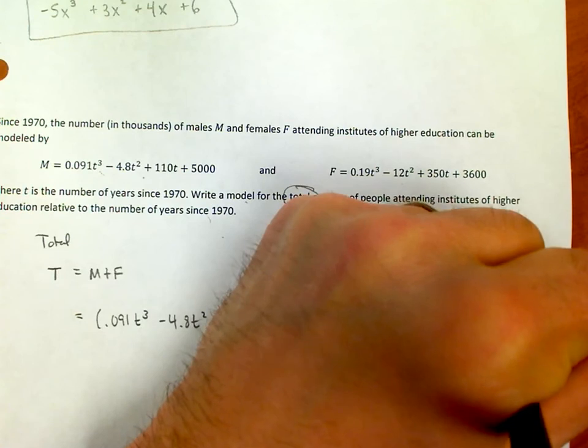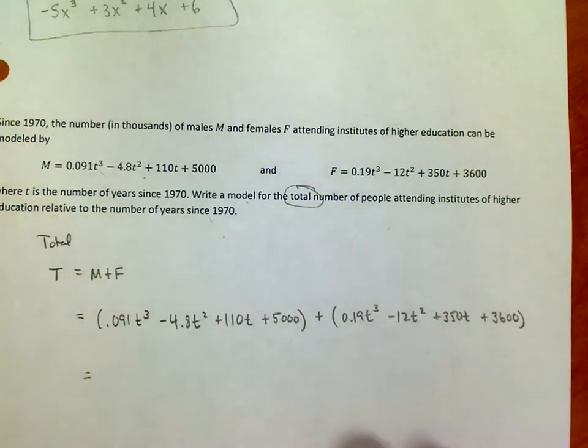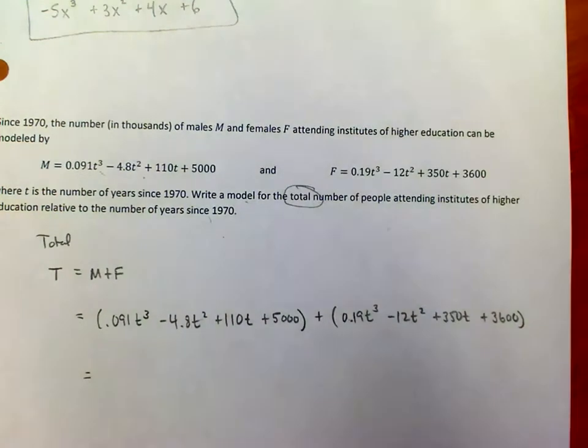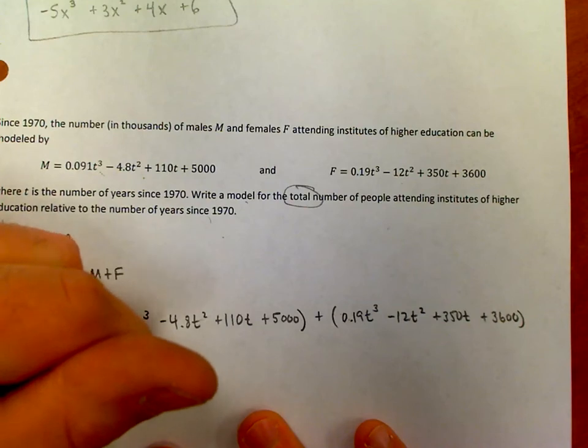I just need to combine like terms now, right? I don't need the parentheses, that doesn't matter, just like the previous video. And maybe I just get a calculator out and I go through and I make sure that I get my decimals correct. So what is 0.091 plus 0.19? And that is 0.281.